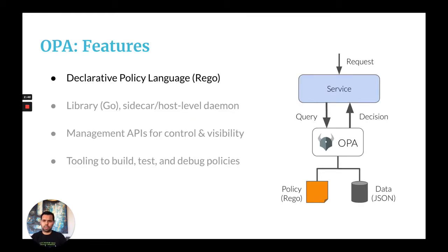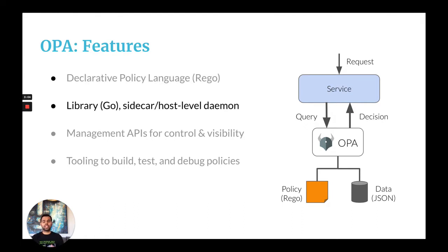Let's quickly look at some of OPA's features. At the core of OPA is a high-level declarative language called Rego. With Rego, you can write policy decisions which are Boolean, sets, objects, arrays, and so on. OPA is written in Go and is designed to be as lightweight as possible, so all the policies and data you need for evaluation are stored in memory. You can deploy OPA as a sidecar, a host-level daemon, or embed it inside your code if you're writing Go.